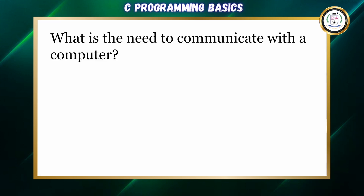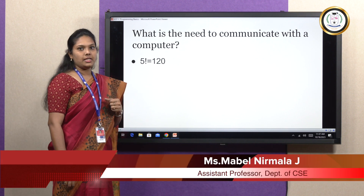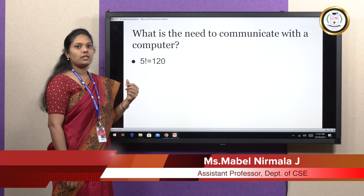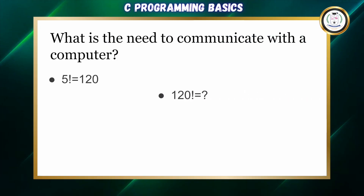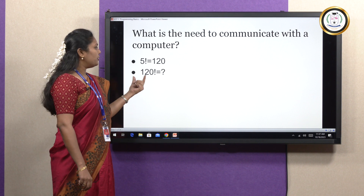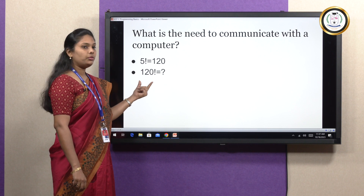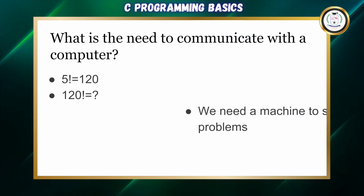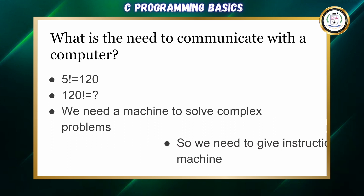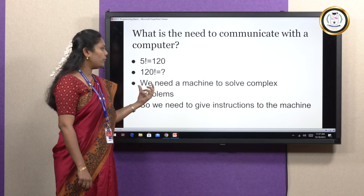Now we need to communicate with the computer to solve problems. Problems simple like calculating the factorial of 5 are easy — we can compute 5 × 4 × 3 × 2 × 1 = 120 using our human brain. But finding the factorial of 120 is a tedious and boring task, requiring us to compute 120 × 119 × ... down to 1. So we need a machine to solve complex problems — that is the need to communicate with the computer.